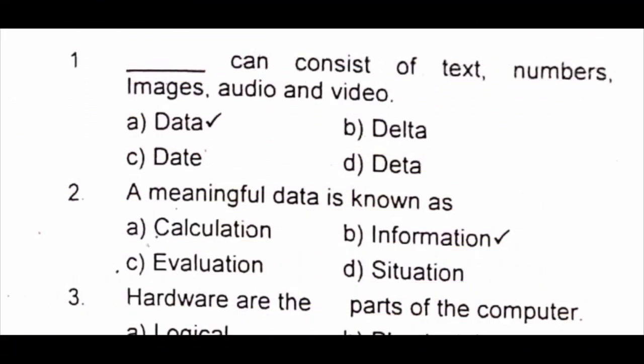Question 1: Dash can consist of text, numbers, images, audio and video. A) data B) delta C) date D) data. The answer is A) data. Question 2: A meaningful data is known as A) calculation B) information C) evolution D) situation. The answer is B) information.